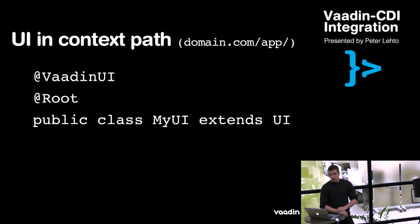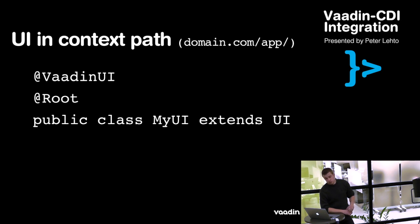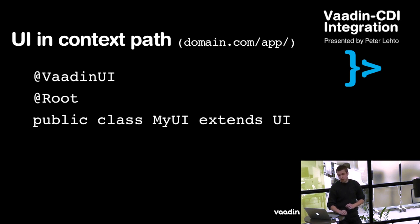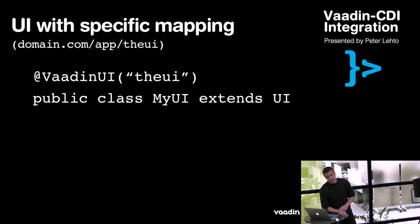So how do you use this? There is basically one key annotation which is @VaadinUI, and you use that annotation with your UI class which extends from the Vaadin UI. If that is your only UI within the application you can also specify the @Root annotation, and in order to visit this UI you can access the application from its context path. The @Root annotation is the one that assigns the UI to the context path. If you want more specific mapping for your UI, you can give it as a parameter for the @VaadinUI annotation, and this will add the UI path after your actual application context path.